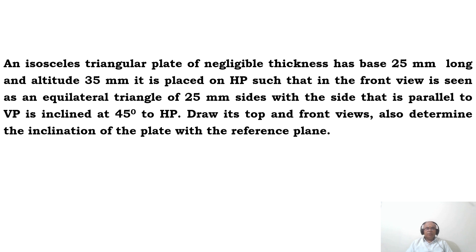In this video we will take up one more problem on projections of laminas — how to analyze this problem in 3D and also solve it using the sketchbook. The problem reads: an isosceles triangular plate of negligible thickness has a base 25 mm long and altitude 35 mm. It is placed on HP such that in the front view it is seen as an equilateral triangle of 25 mm sides.